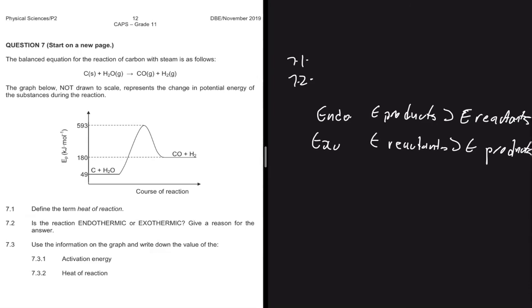As you can see here, the energy of the reactants, we have 49 kilojoules per mole. And the energy of the products, we have 180 kilojoules per mole. So clearly, the energy of the products in this instance is greater than the energy of the reactants. So we have an endothermic.